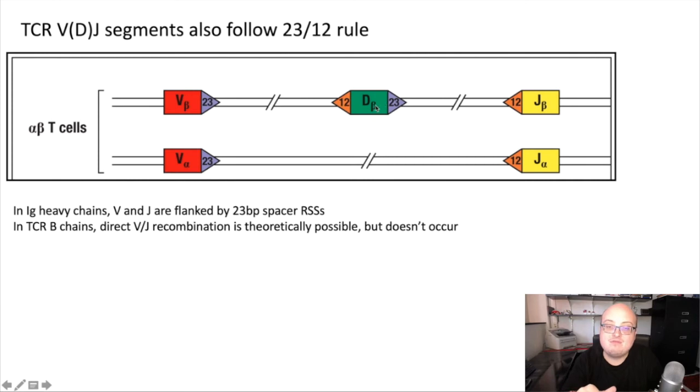The D is flanked on either side by either 12 or 23, and that'll determine which side combines with which segment ultimately. That's one small point of departure between TCR VDJ recombination and immunoglobulins.